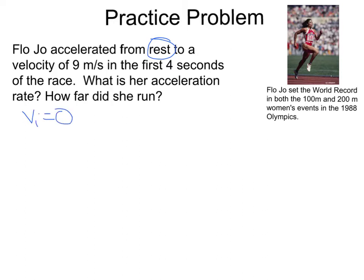It then says she reached a velocity of 9m per second. Well, let's call that her final velocity. And it said it took her 4 seconds to do that, so that would be the change in time, 4 seconds. And they're asking what her acceleration rate is, so that would be A we're looking for. And then how far did she run, which is her change in position.